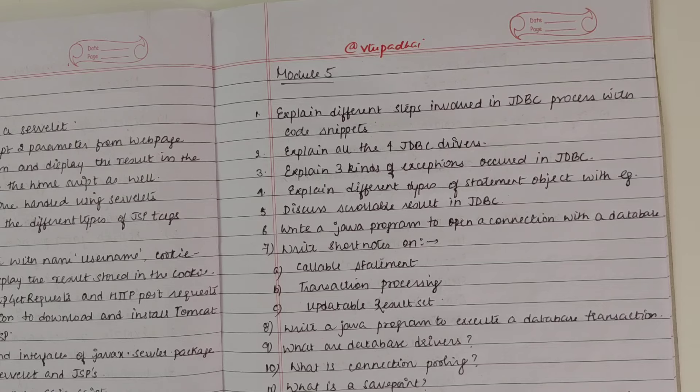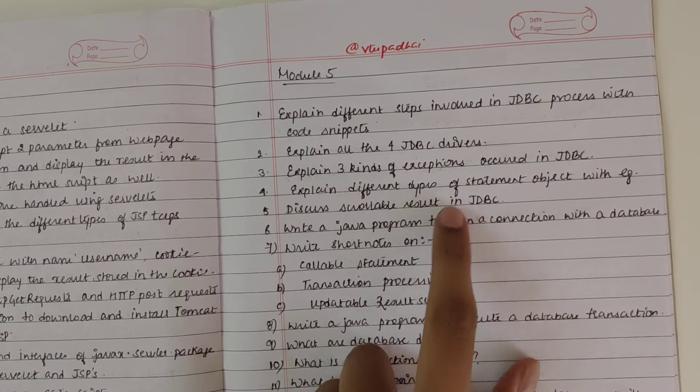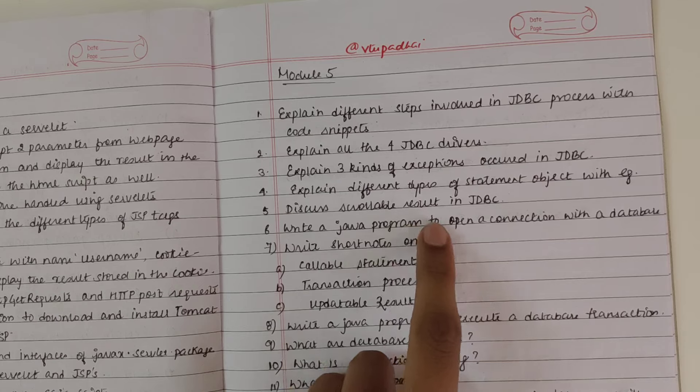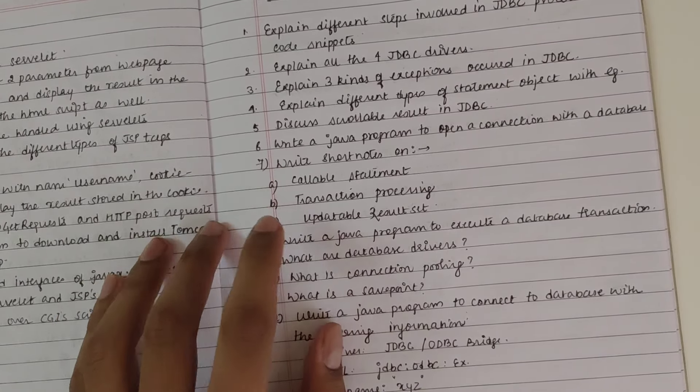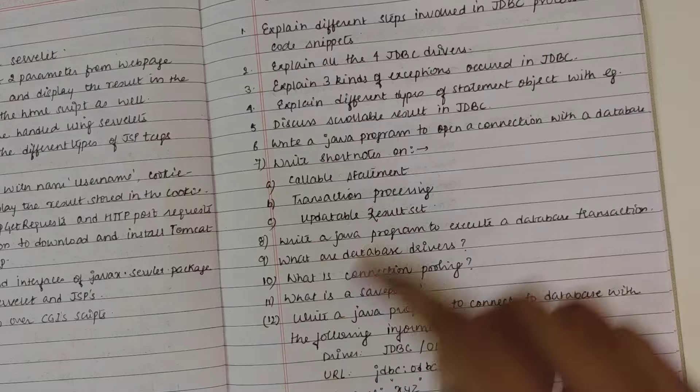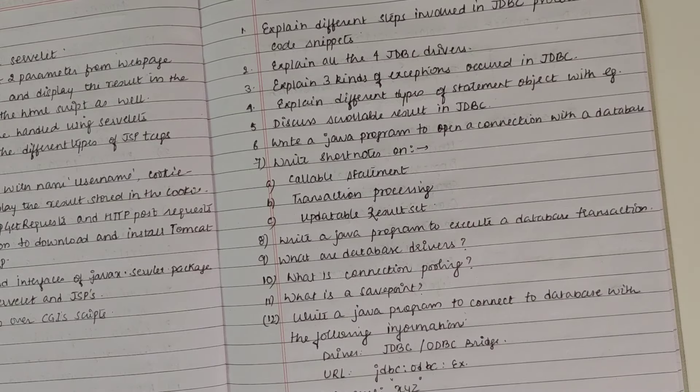Explain the three kinds of exceptions that occur in JDBC. Discuss scrollable result set. Build a Java program to open a connection with the database. Short notes: callable statement, transaction processing, updateable result set. For all these things you have to write the program also and give the explanation of the program.